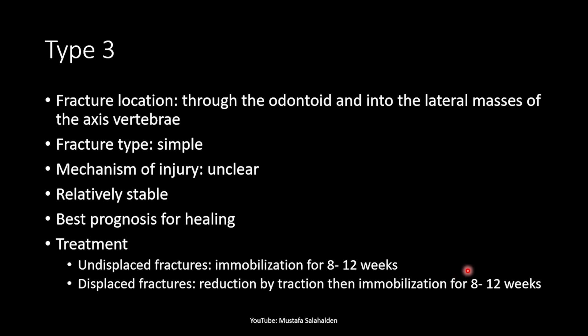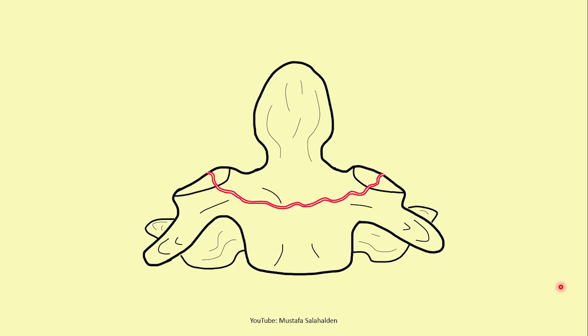If the Type 3 fracture is displaced, the treatment is reduction by traction followed by immobilization for 8 to 12 weeks. The drawing shows the fracture going through the body of C2 and into the lateral masses. Because it is relatively stable, non-displaced cases are managed conservatively with immobilization.